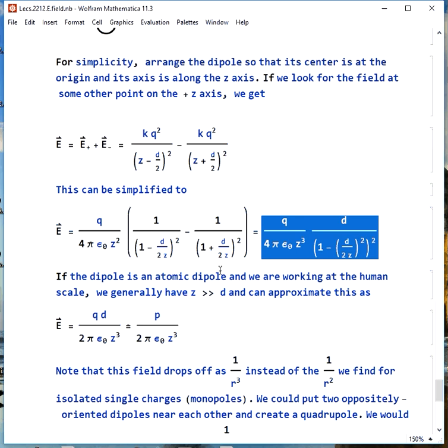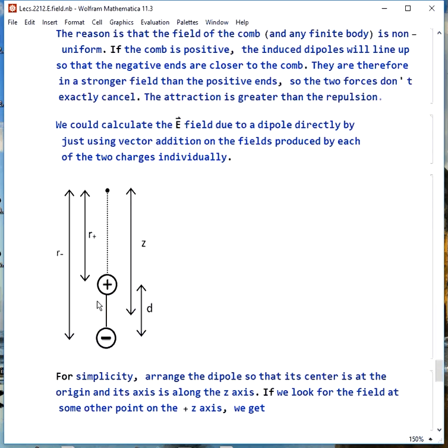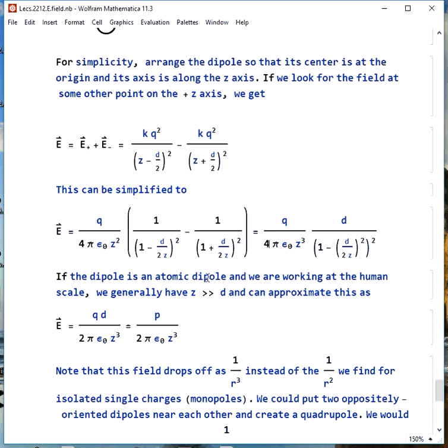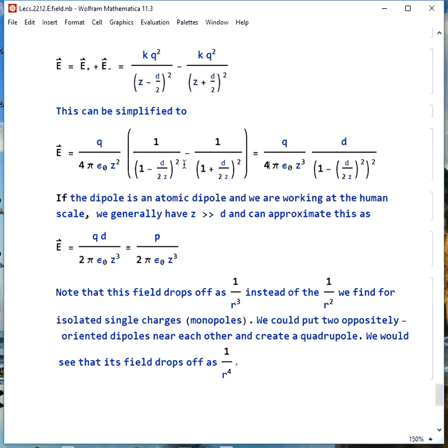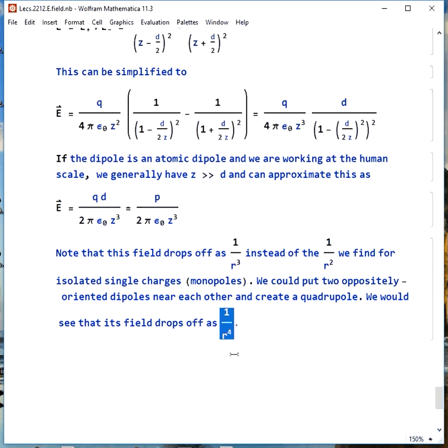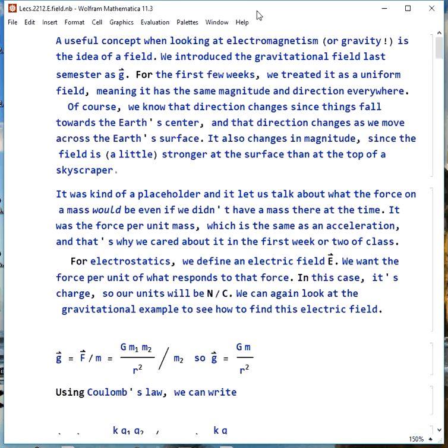The reason is, in general, if we're working at the human scale, our separation from the center of this dipole is huge compared to the size of the dipole, since the size of it is an atomic radius. That means we have this approximation instead, P over 2π epsilon naught z cubed. We notice that this field drops off as 1 over r cubed instead of 1 over r squared, which we found for isolated single charges. If we happen to put two oppositely oriented dipoles near each other, we could make a quadrupole. The field from that would drop off as 1 over r to the fourth.